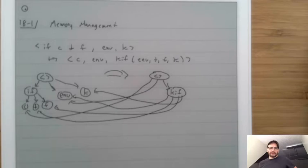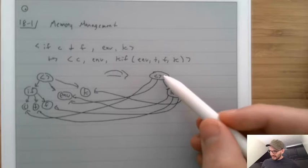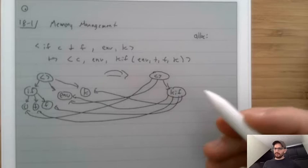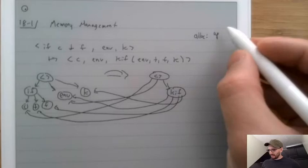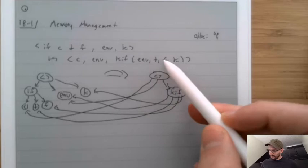Notice we have allocated two things: a tuple with four spots — a label and three pointers — and a kif with five spots, because that's five pointers plus one label. So we allocated nine things total.